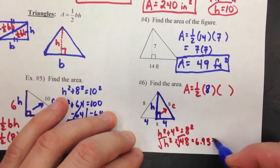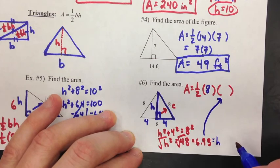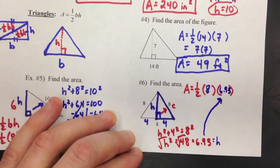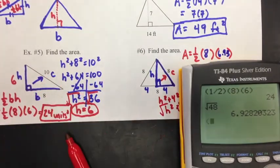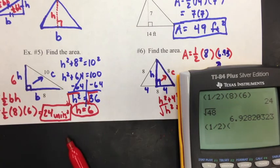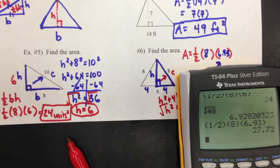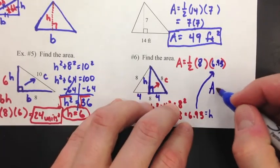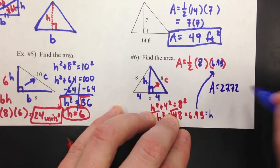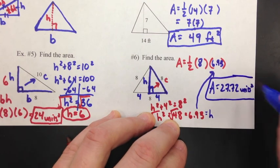Now, that's my H. So, I go back to the formula, 6.93, and it's a calculator problem. We've got 1 half times 8 times 6.93, and we get 27.72, 27.72 units squared, and that is the end of part 1.